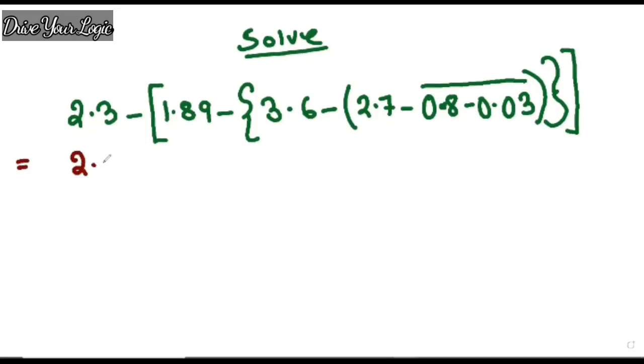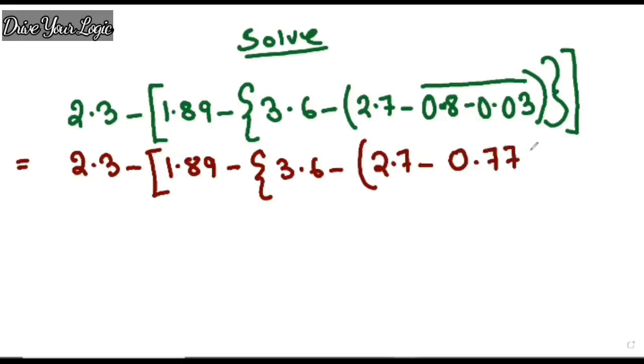2.3 minus [1.89 minus {3.6 minus (2.7 minus, solve this part: 0.8 minus 0.03. What's your answer? Just subtract and check, it will be 0.77. Clear, so the bar is complete.